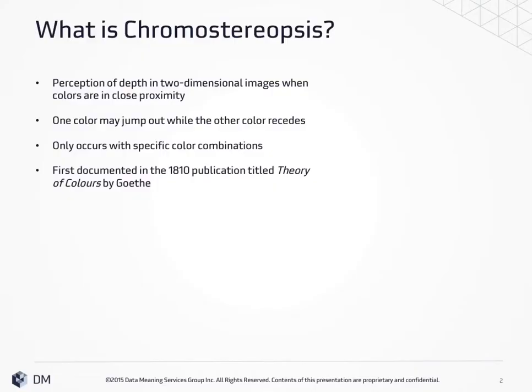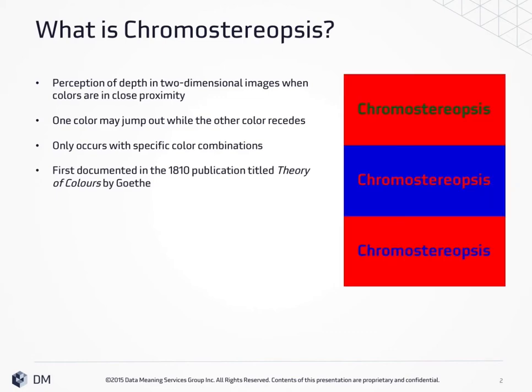So what is Chromostereopsis? It's a perception of depth in two-dimensional images when colors are in close proximity. If you look at the example on the right, you'll notice one color might jump out while the other color recedes. This only happens with specific color combinations.